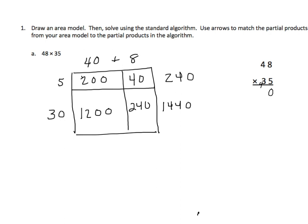We'll regroup that 4. And now I have 5 ones times 4 tens, which is 200, or 20 tens. So we add our 4, and we get 240. And now we'll go on to our next place.